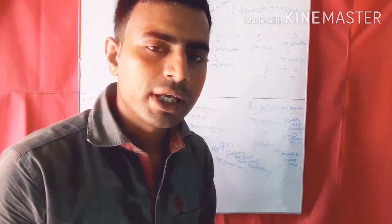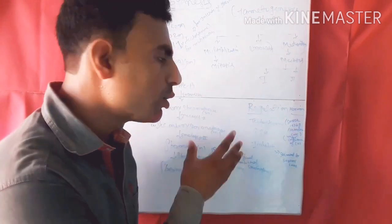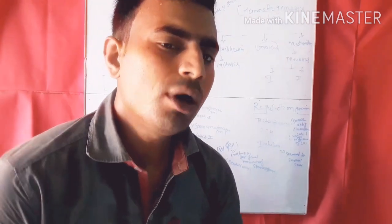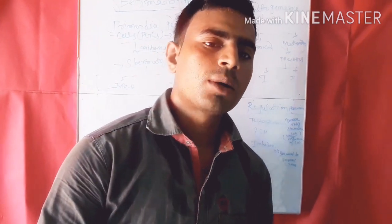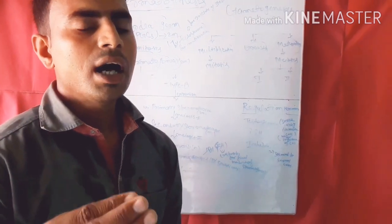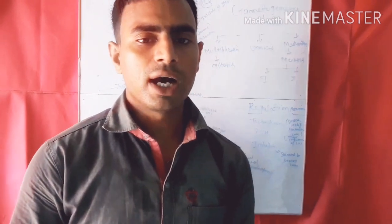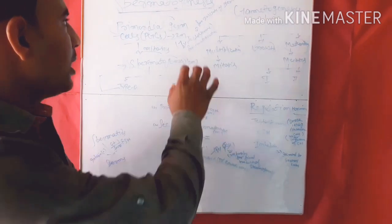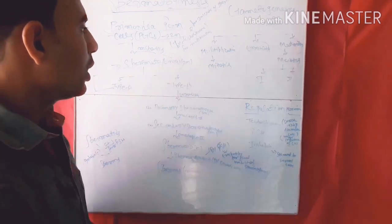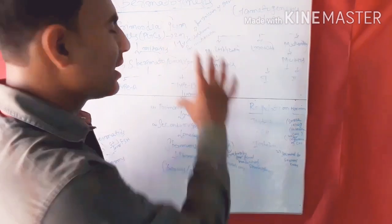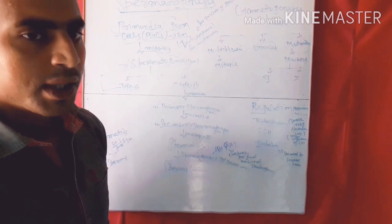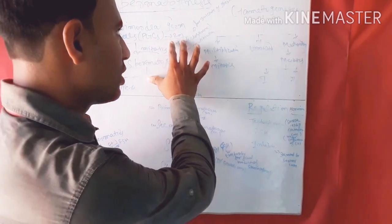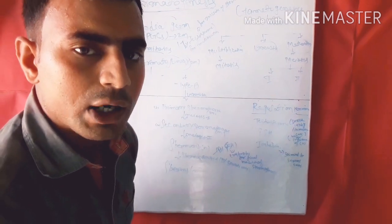Now we will see the regulation by hormones — which hormones play a role — this is a very important topic often asked in exams. Three hormones play a role: testosterone, follicle-stimulating hormone (FSH), and inhibin. Testosterone hormone is responsible for converting primordial germ cells into spermatogonia, meaning testosterone initiates the multiplication phase.